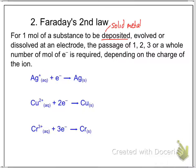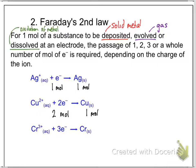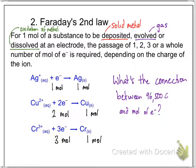Deposited means a solid metal deposited at the cathode; evolved means a gas at either the anode or cathode; dissolved means oxidation of metal at the anode. For silver, because it's got 1+ as a charge on the ion, it needs one mole of electrons to get one mole of solid metal. A copper 2+ ion would require two moles of electrons to get one mole of solid copper. And a chromium 3+ ion needs three moles of electrons to get one mole of solid chromium. So what is the connection between 96,500 coulombs and moles of electrons? To get one mole of solid silver you needed one lot of 96,500 coulombs.